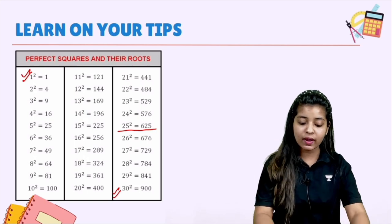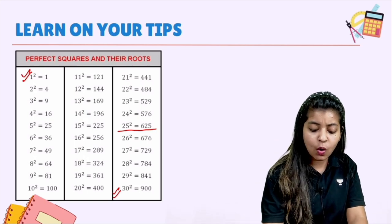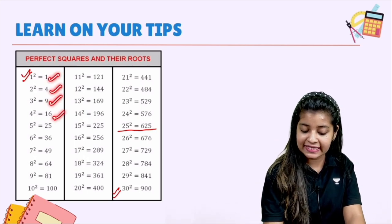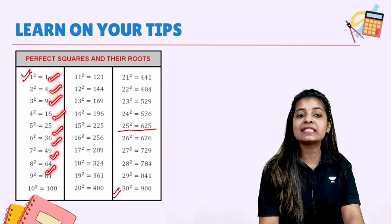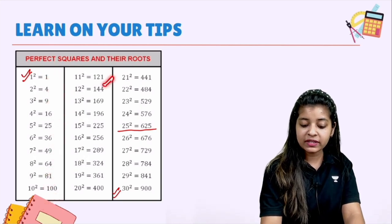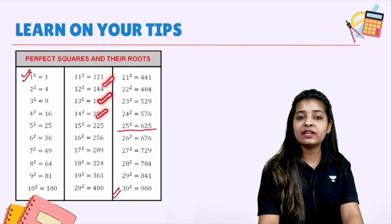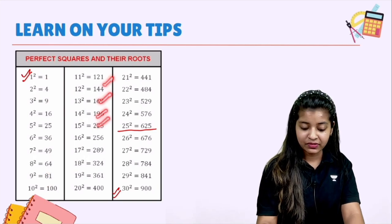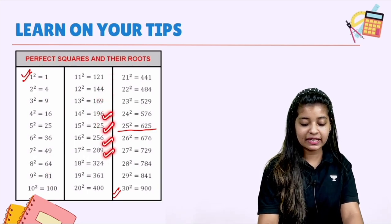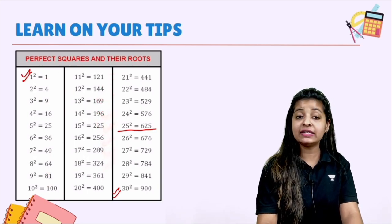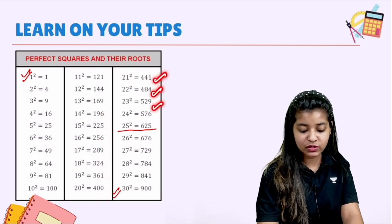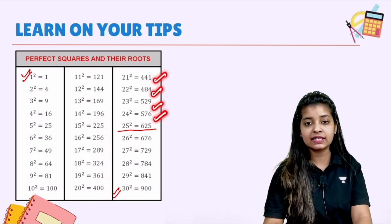One squared is 1. We know about it: 1, 4, 9, 16, 25, 36, 49, 64, 81, 100, 121, 144, 169, 196, 225, 256, 289, 324, 361, 400, 441, 484, 529, 576.